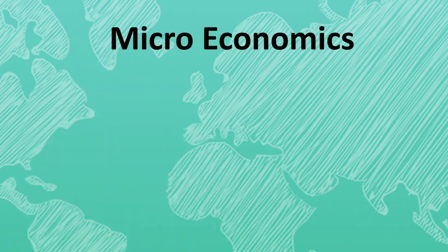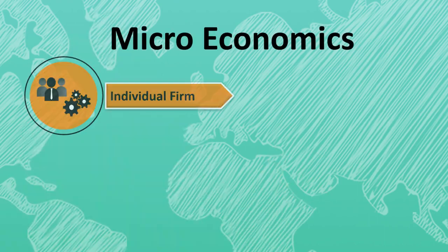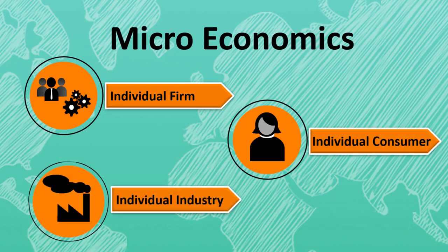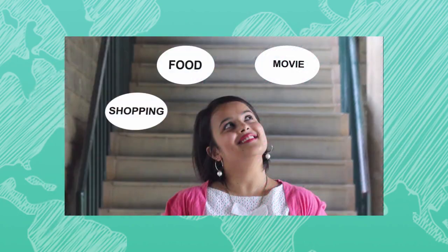In particular, microeconomics is concerned with individuals — individual firms, individual consumers, and individual industries. We saw Pranjal choosing between clothes, movies, and food earlier. That is a microeconomic decision.